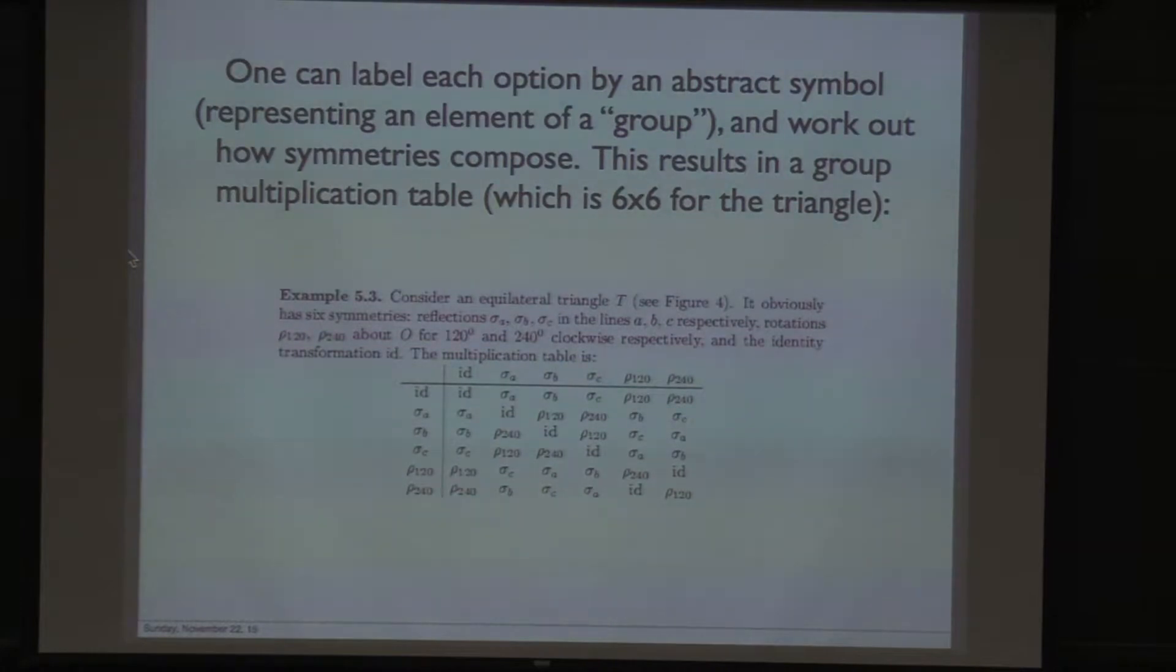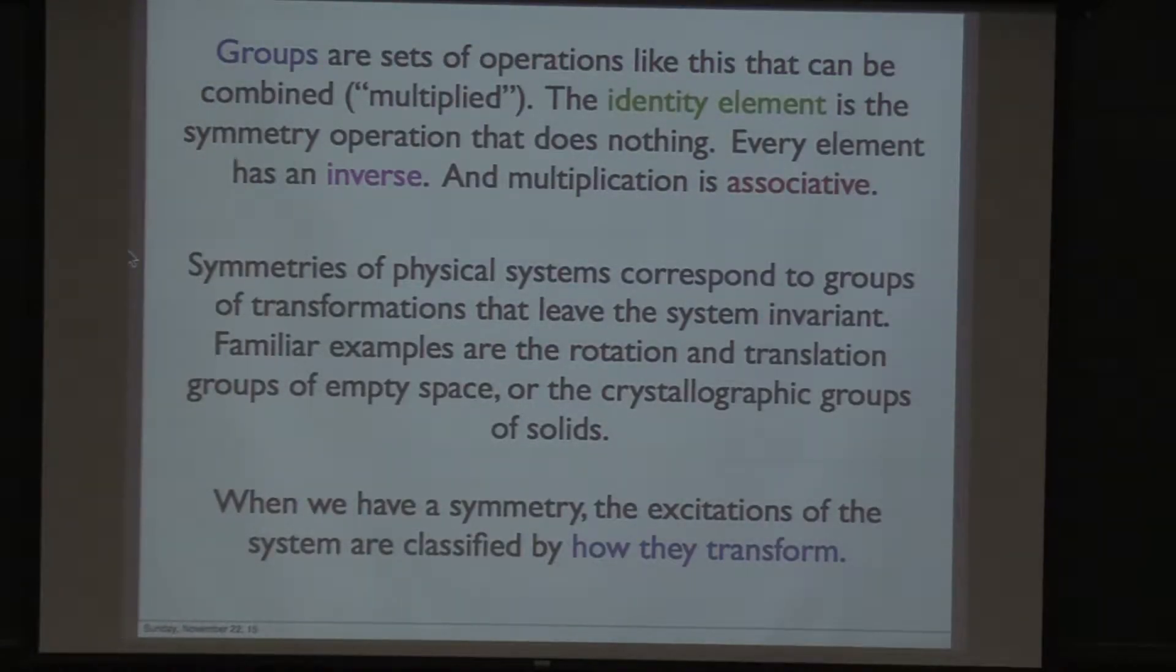If you label each operation by abstract symbols, which represent elements of a mathematical object called a group, you could work out how the symmetries compose. This results in a group multiplication table, which is 6x6 for the triangle. More formally, groups are sets of operations that can be combined or multiplied. The identity element that does nothing is always in the group. Every element in the group has an inverse, and multiplication is associative.